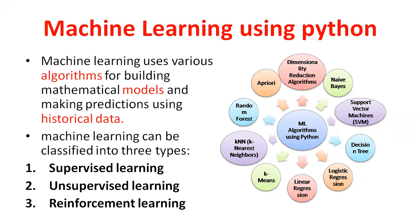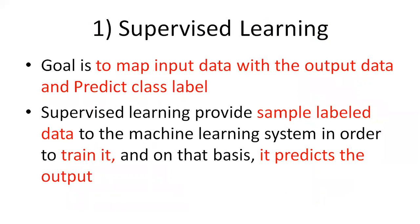The three types are supervised machine learning, unsupervised machine learning, and reinforcement machine learning. The main goal of supervised machine learning is to map the input data with the output data and predict class labels. You define input values and output values, and based on those, you predict the class label — where class labels are pre-defined output values.